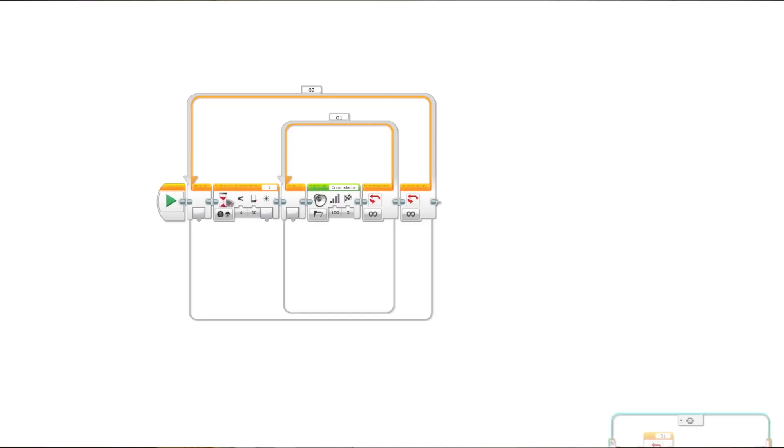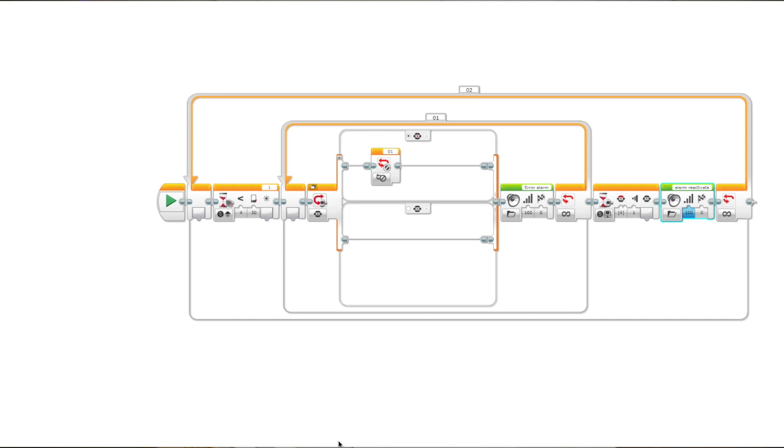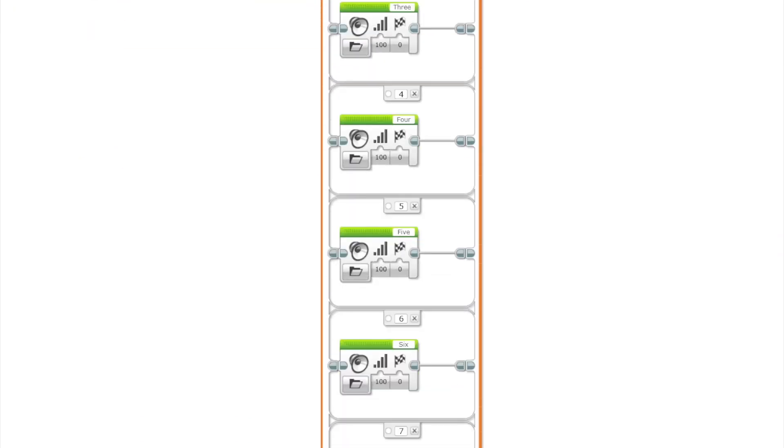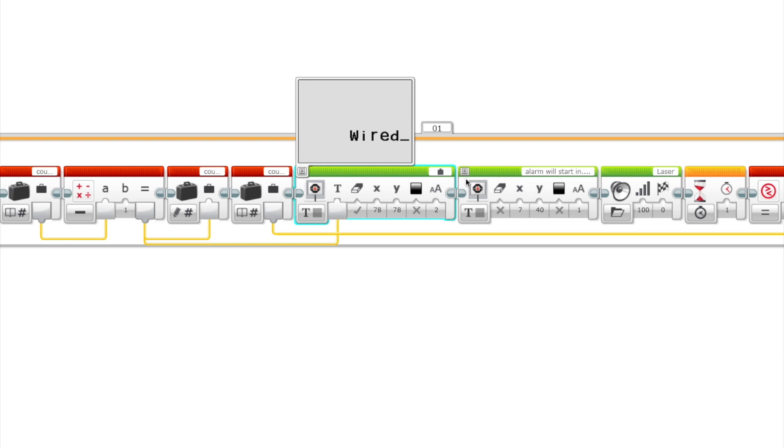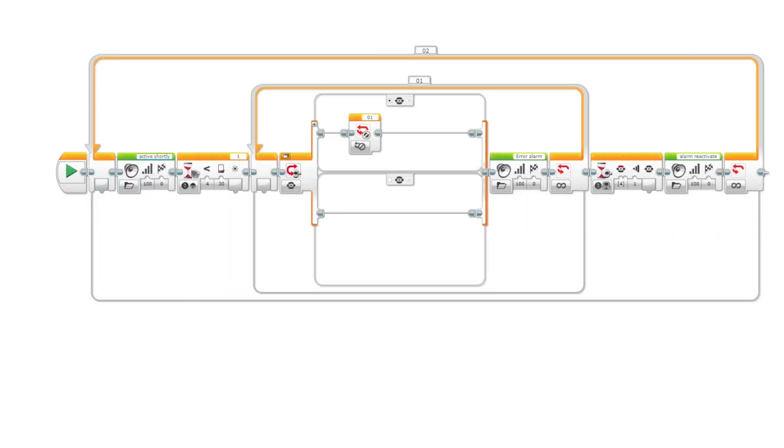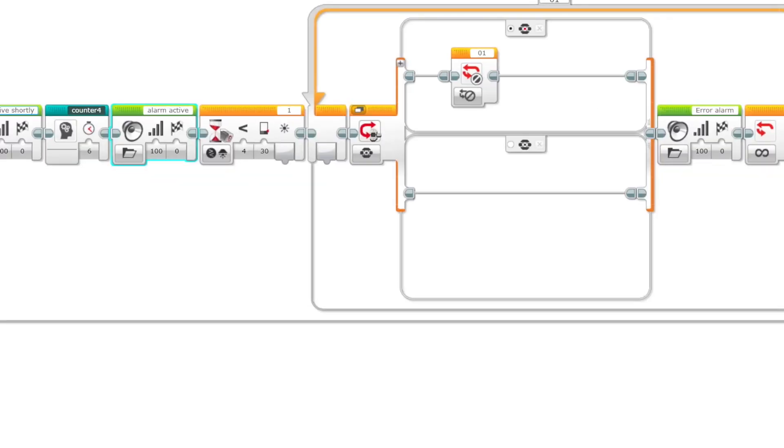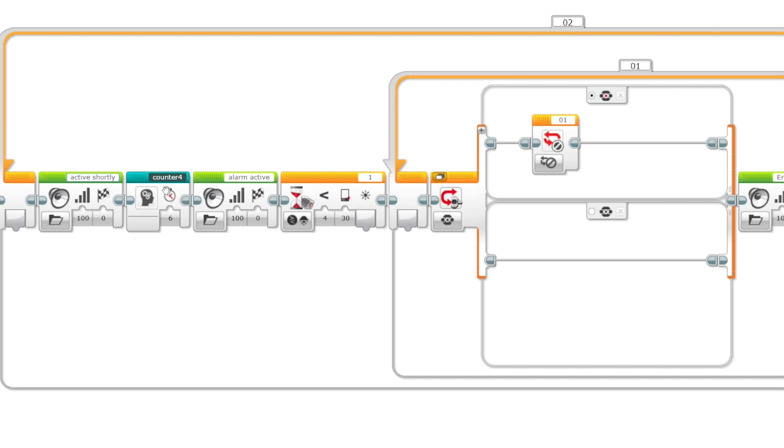For the coding, I started off by making the simplest looping alarm. Once I had that, I added other enhancements like a countdown, warning messages, and an information display. I created a custom block for the countdown so that I could easily reuse it in different places if needed. With everything loaded into the EV3, it's time to test it out.